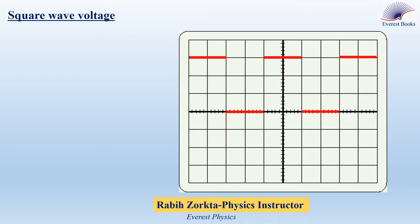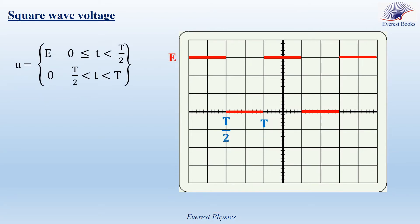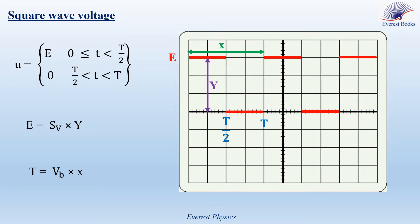The figure shows a square wave voltage on the screen of the oscilloscope, so that during the first half of each period the voltage is equal to a constant value E, and during the second half of each period the voltage is equal to 0. E is given by the formula E = SV × Y, where SV is the vertical sensitivity or amplitude gain of the oscilloscope, and Y is the number of vertical divisions measured relative to the time axis. The period of the voltage is given by T = VB × X, where VB is the horizontal sensitivity or time base of the oscilloscope, and X is the number of horizontal divisions measured over one cycle.